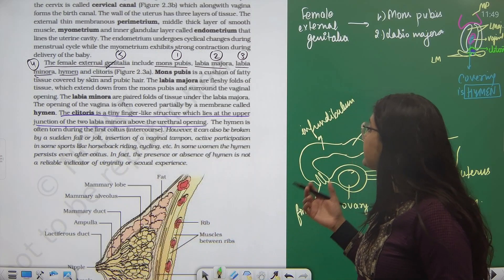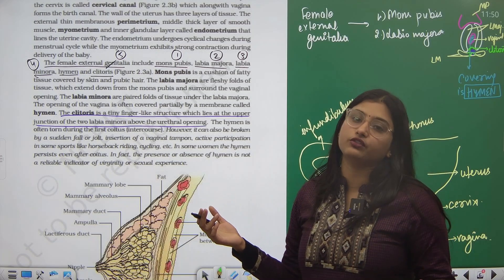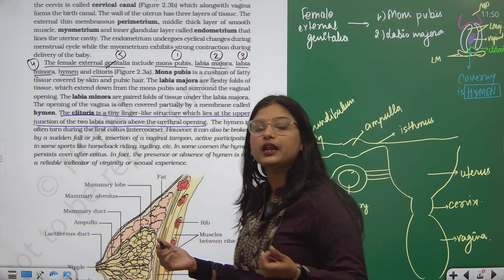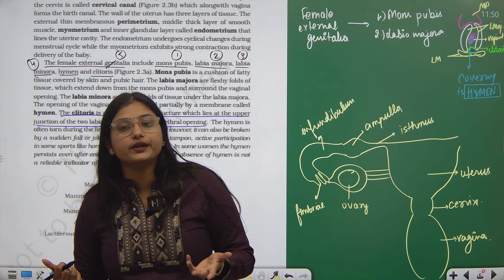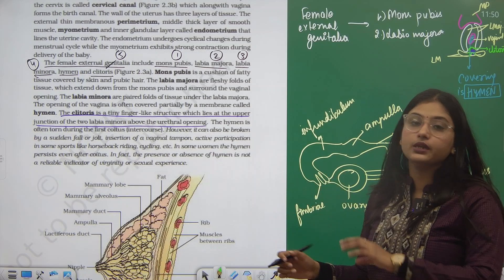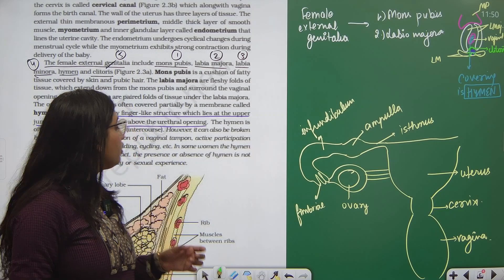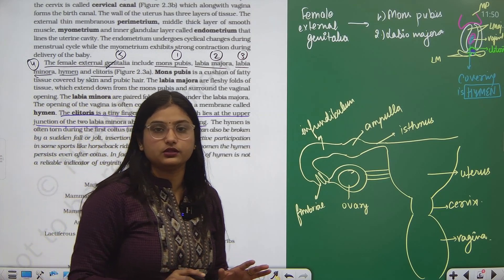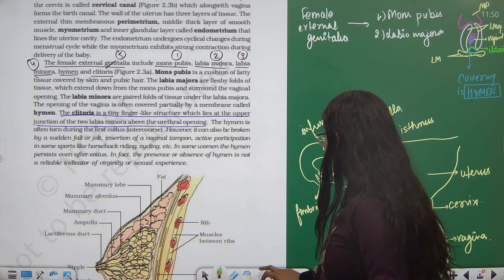In some women the hymen persists even after the coitus, as I told you it is not a reliable indicator. Sometimes even after the coitus this hymen is present. In fact, the presence or absence of hymen is not a reliable indicator of virginity or sexual experience, not at all.